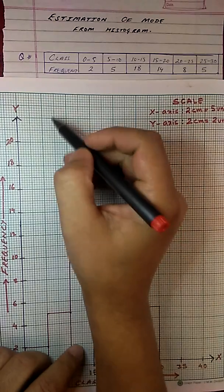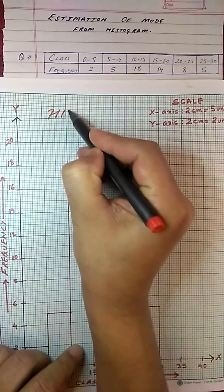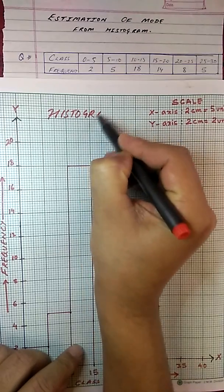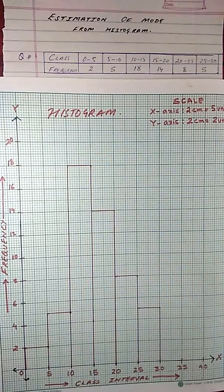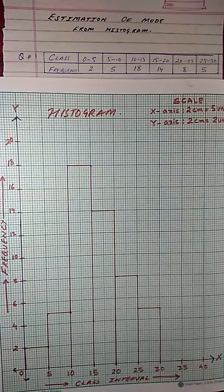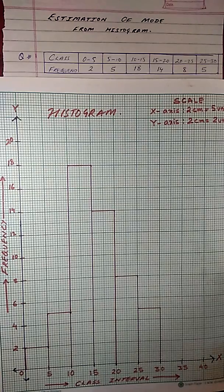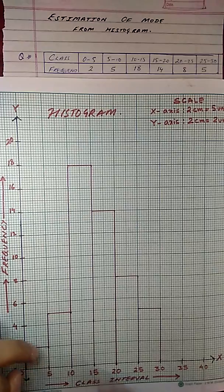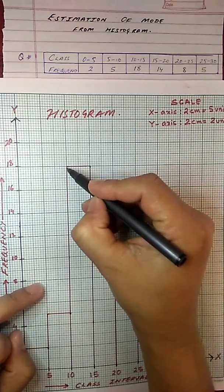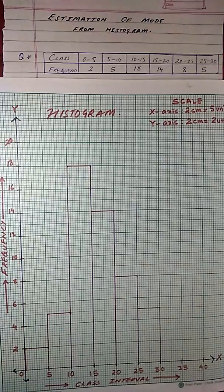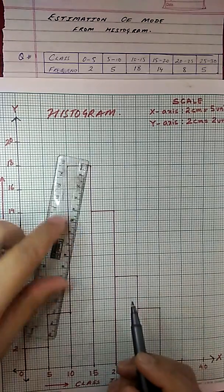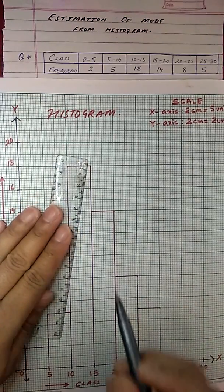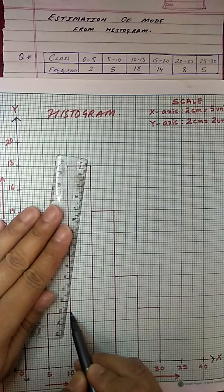Let me write down. This is our histogram. Now we need to estimate what is the mode. For that, we will take the modal class. As I told you, the modal class is 10 to 15. Now from the peak, from these two ends, we will draw lines meeting the peak of the other class. So from here, I am drawing it at this point.